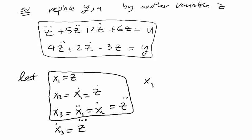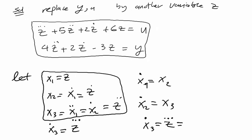We have x1 dot equals x2, x2 dot equals x3, and x3 dot equals z triple dot.